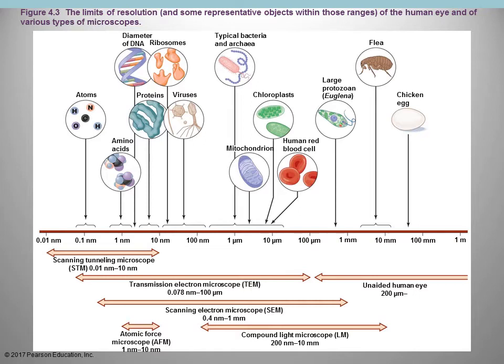To see smaller things, we have scanning electron microscopes and transmission electron microscopes, which allow you to see even smaller. There are also things such as the atomic force microscope and the scanning tunneling microscope. Different types of microscopes allow us to see a range of different sizes, so the size frame you're working at determines which kind of microscope you're going to use.